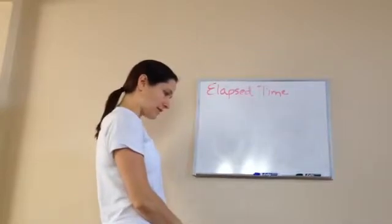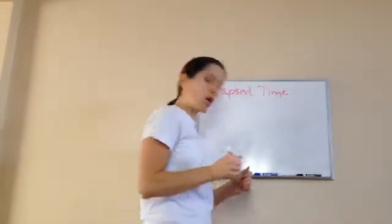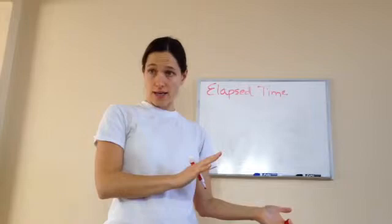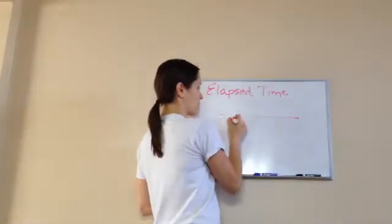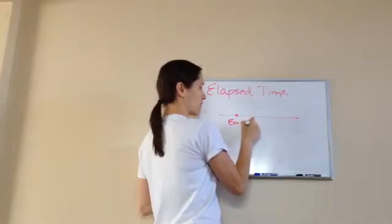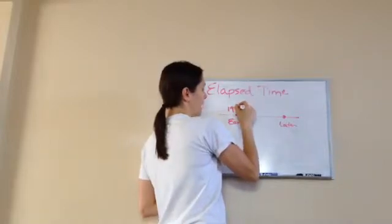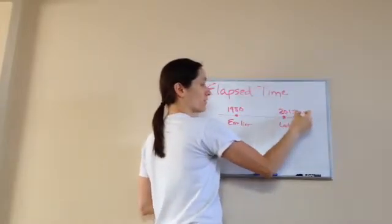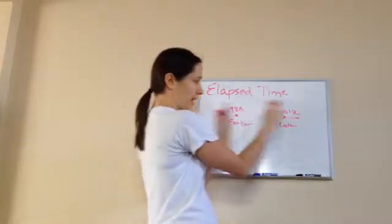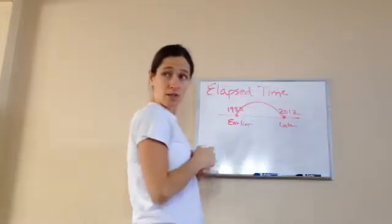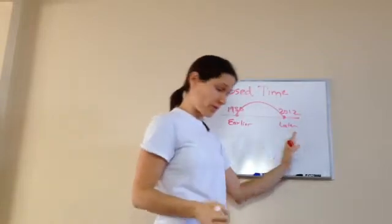Elapsed time is kind of like the comparison problems we just did, but this time you're talking about time, how much time has gone by. If we're looking at a timeline, this is the earlier time and this would be the later. For example, if this was 1980, this would be 2012. Earlier and later, and then we try to figure out how much time has elapsed from this time to this time.